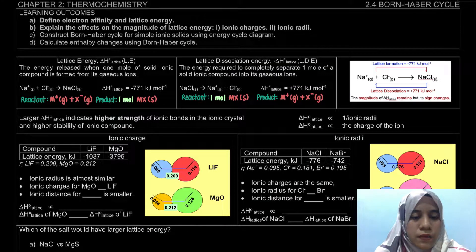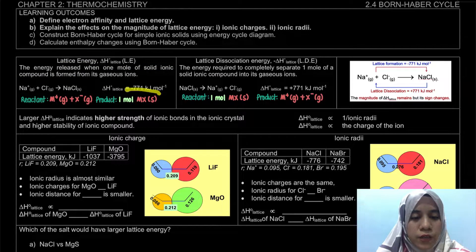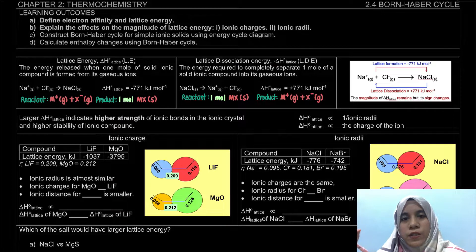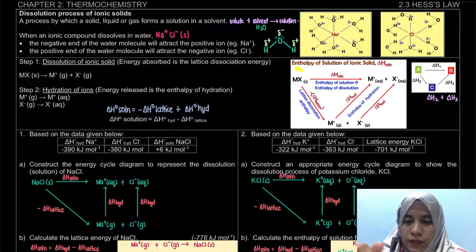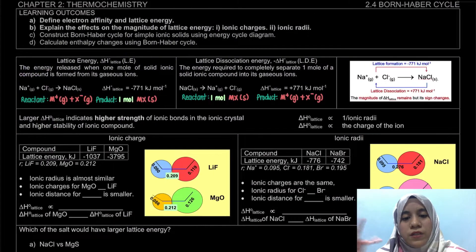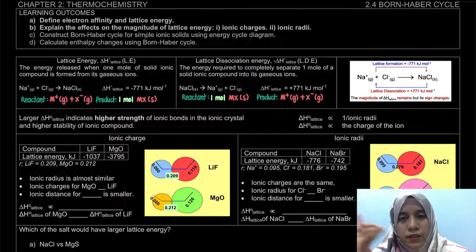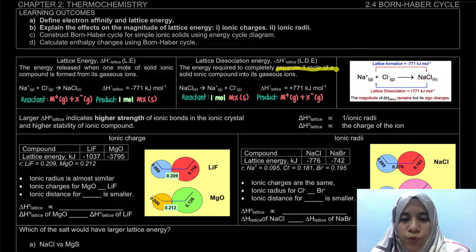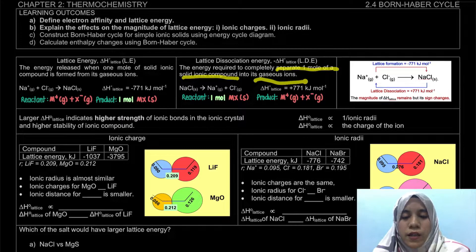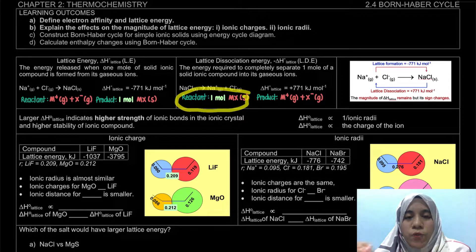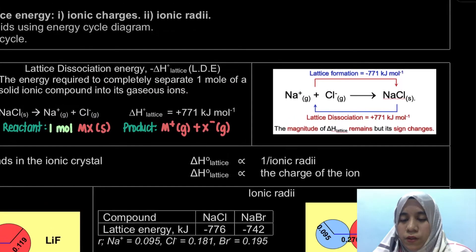Remember, lattice energy is when one mole of solid ionic compound is formed, so the product must be one mole. We have also learned about lattice dissociation energy briefly during our discussion of dissolution of ionic solids. The difference is that dissociation means to separate — so instead of forming the solid ionic compound, it separates one mole of solid ionic compound into its gaseous ions. It is the direct opposite of lattice energy, and the reactant must be one mole of ionic solid.